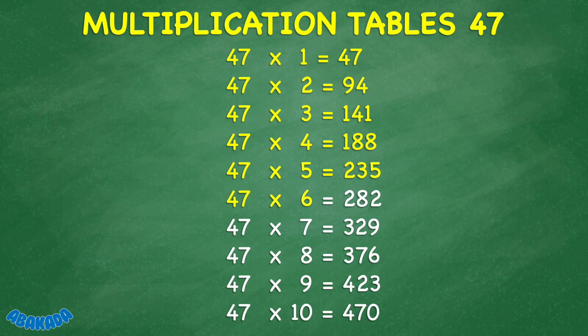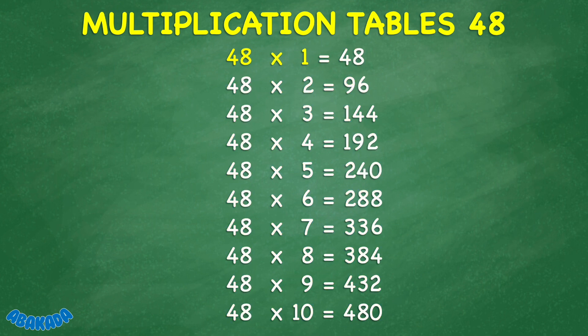47 times 6 equals 282. 47 times 7 equals 329. 47 times 8 equals 376. 47 times 9 equals 423. 47 times 10 equals 470.